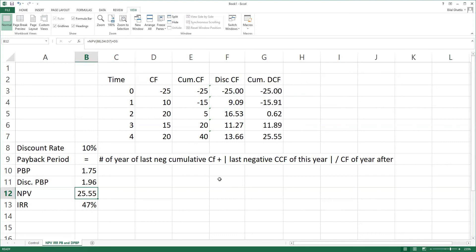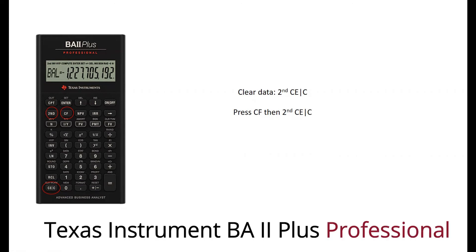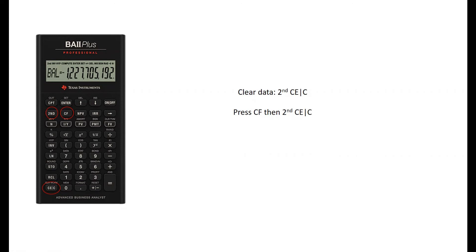Now let's move on to the Texas BA2 Plus Professional. It is now time to work on the calculator. Please turn on your calculator. Before you do that, you need to be aware that you need the professional version of the Texas Instrument BA2 Plus to be able to calculate the payback period and the discounted payback period. If you don't have the professional version, you have to do it manually. Turn on your calculator and make sure to clear the data on the general screen: press Second, Clear, then press Cash Flow, and press Second, Clear again to clear all the data that have been stored.